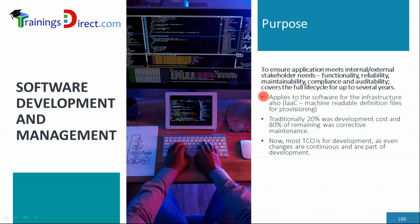Tools like Puppet, Chef, or Ansible are used for deployment scripting. These are known as IaC — Infrastructure as Code — files that can be written by humans. When given to the system, they know exactly how to deploy thousands of systems very quickly and automatically. This software also falls under software development and management.